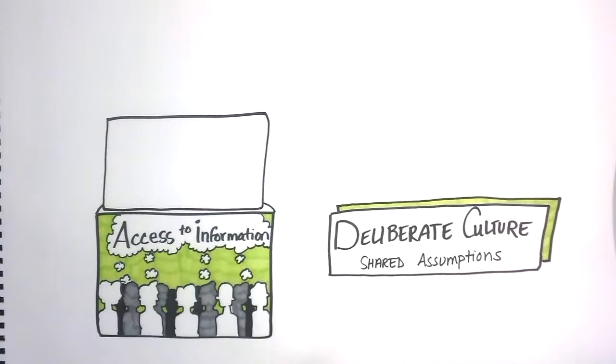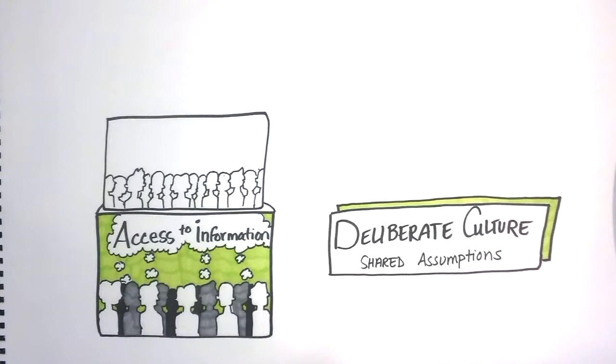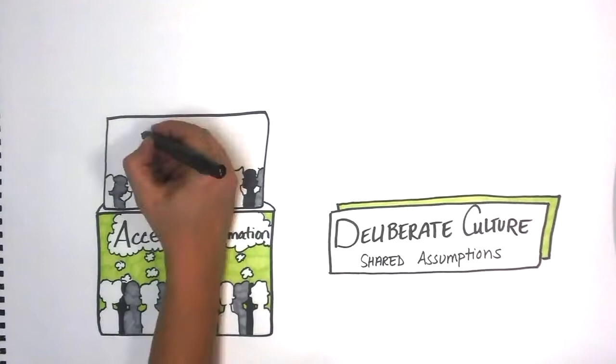The second tier of person-centered systems would be espoused values. These are verbal expressions that come from the adoption of a deliberate culture. Using a person's name instead of resident is an example of an espoused value. When assisting people with long-term support needs, asking them about their preferences, strengths, capacities, needs, and desired outcomes is a perfect example of an espoused value.